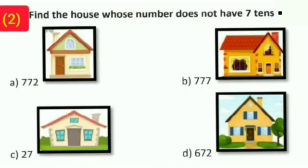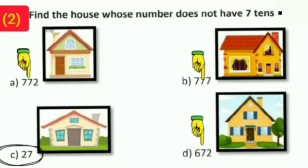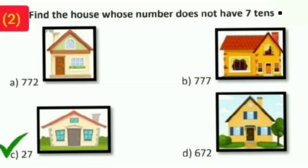Question number 2: Find the house whose number does not have 7 tenths. Four different houses are given to us with different numbers. The houses at option A, B, and D all have 7 tenths. But the house at option C does not have 7 tenths — it has 2 tenths. So we will take option C.